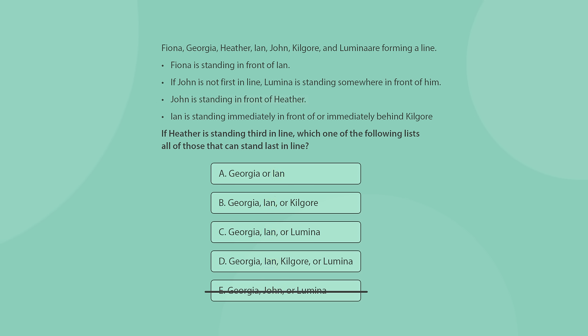The only question is whether Kilgore, Lumina, or both can stand last. After checking each of these cases specifically, we can deduce that there is no rule preventing either Kilgore or Lumina from being last. You can see how we have turned the solution from determining the exact locations of all six participants in every possible variation to checking only two to three specific individuals standing last. This will immediately cut down on your solving time.